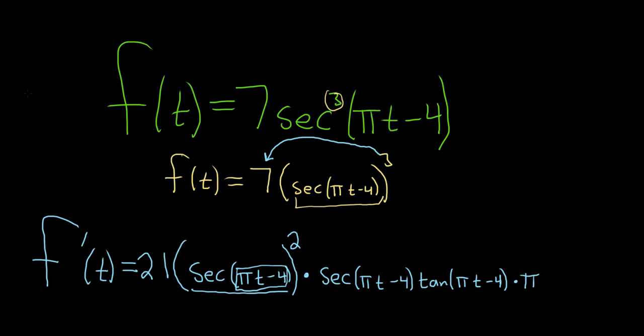Let's go over it one more time very carefully. I'll use a different color. So you bring down the 3. So 3 times 7 is 21. Check. Leave the inside untouched. Subtract 1, so it leaves us with a 2. And then times the derivative of the inside. So now we're focusing solely on the inside piece.